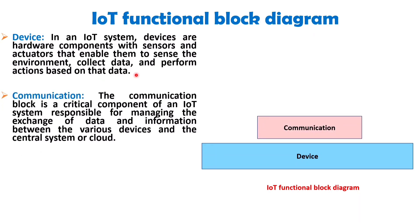Next is communication. The communication block is a critical component of an IoT system responsible for managing the exchange of data and information between various devices and the central system or cloud. It involves both the physical communication infrastructure like Wi-Fi, Bluetooth, ZigBee, and cellular networks, and the communication protocols that govern how data is transmitted and received. It ensures data from sensors is efficiently transmitted to the central system, and enables the central system to send control signals back to devices. Efficient and secure communication is essential to maintain the seamless operation of the entire IoT ecosystem.